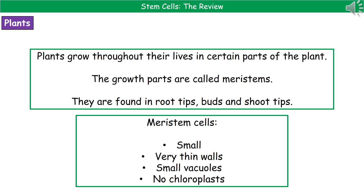If we now think about plants, there's a massive difference between animals and plants: animals only grow for a certain proportion of their life, whereas plants continue to grow throughout their entire lives in certain regions. The areas of the plant capable of growth are called meristems, and we find them in three key areas: the root tips, the shoot tips, and the buds.